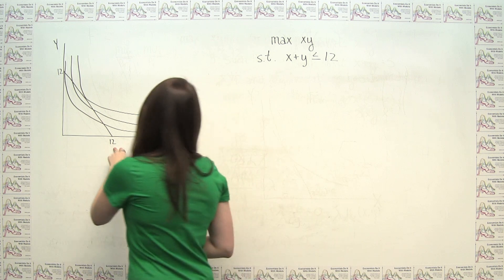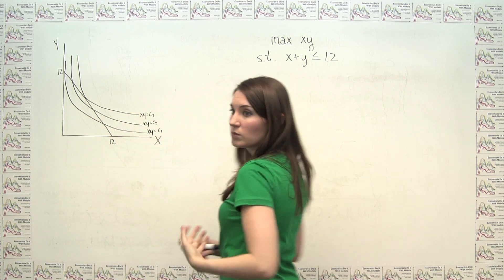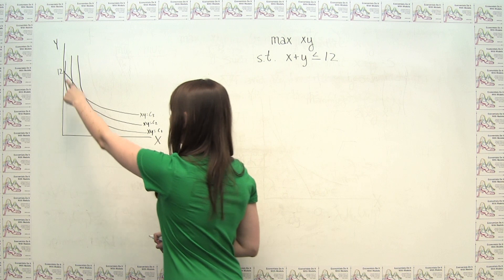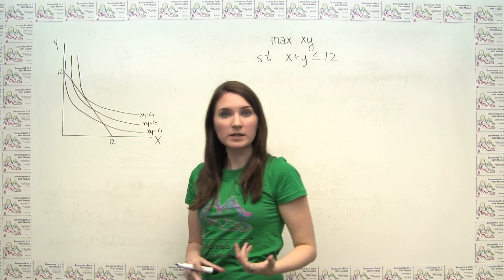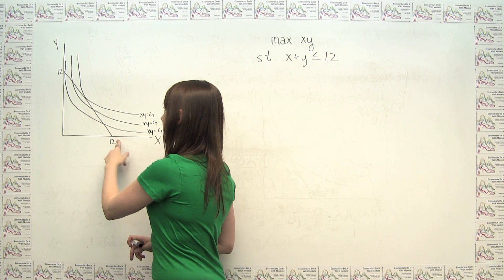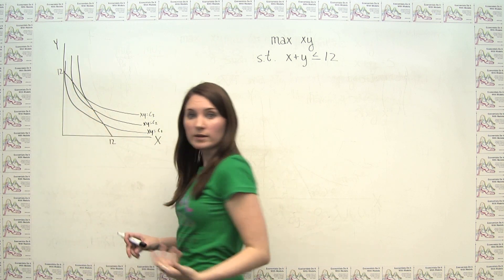Because if we look here, if we look at our constraint, this x plus y has to be less than or equal to 12, that just traces out a line in the xy space that has endpoints at x equals 12 and y equals 12.